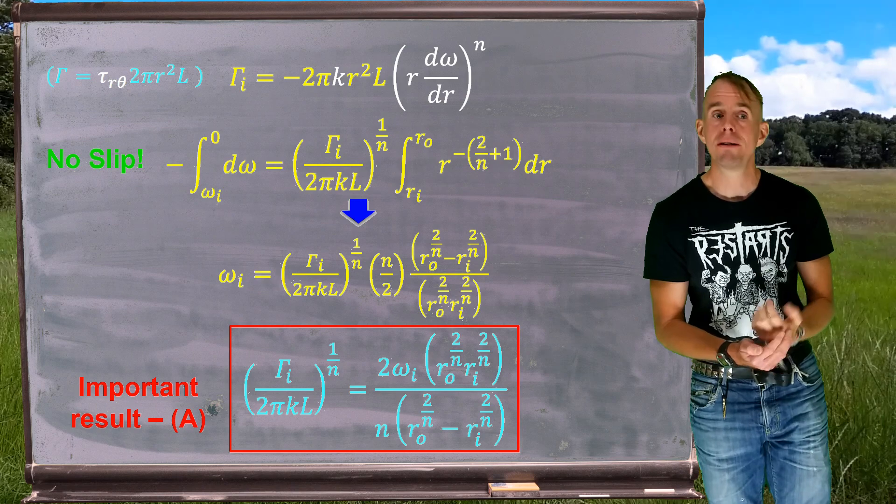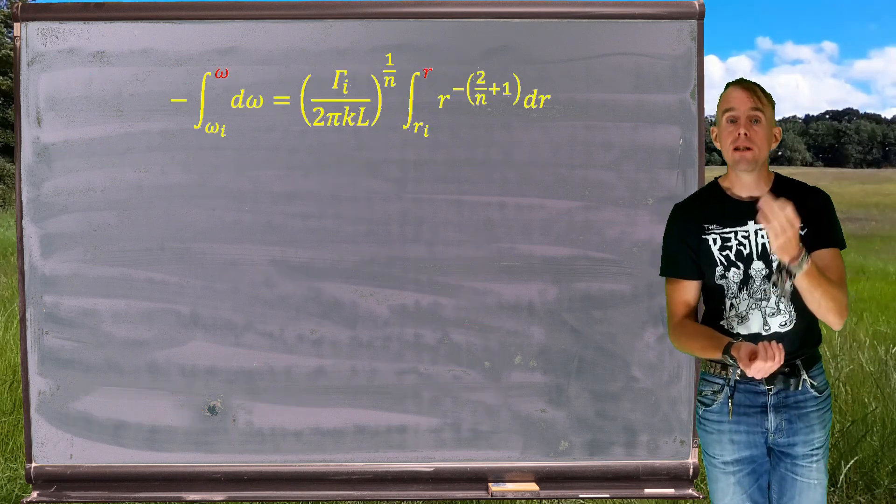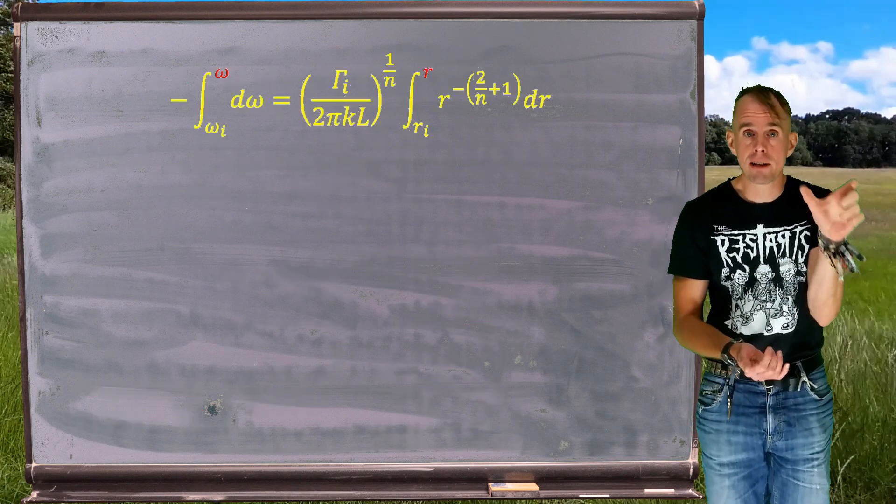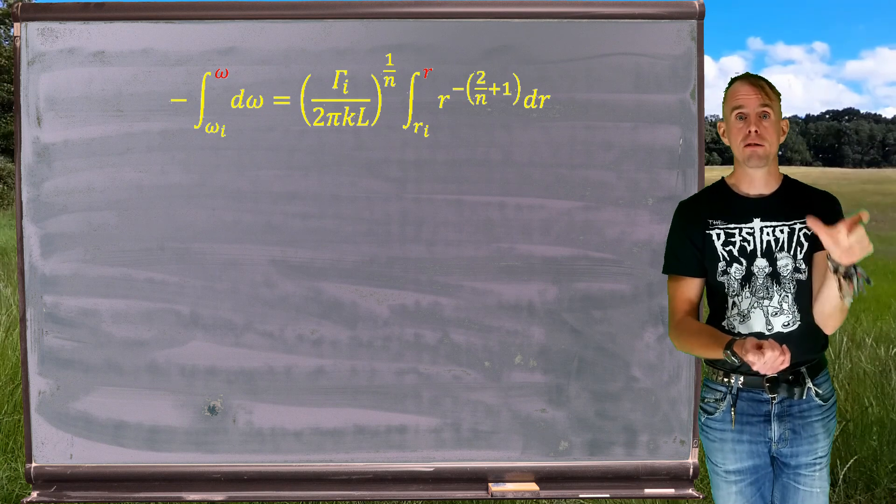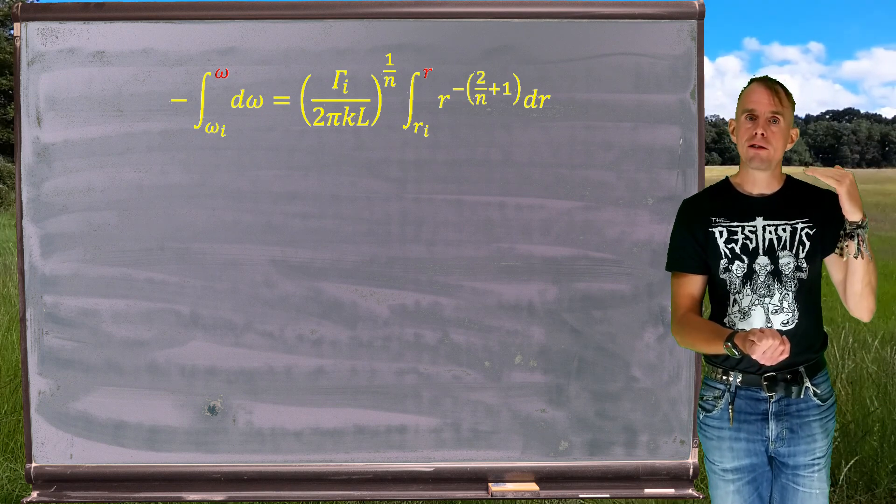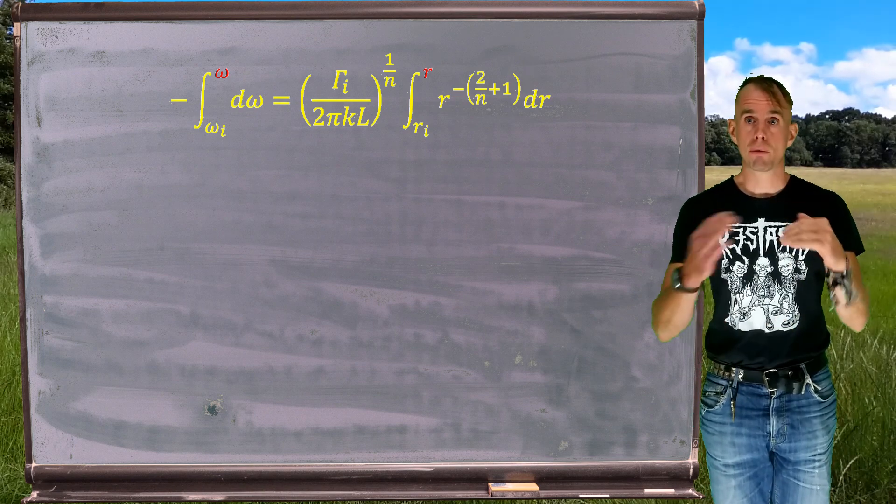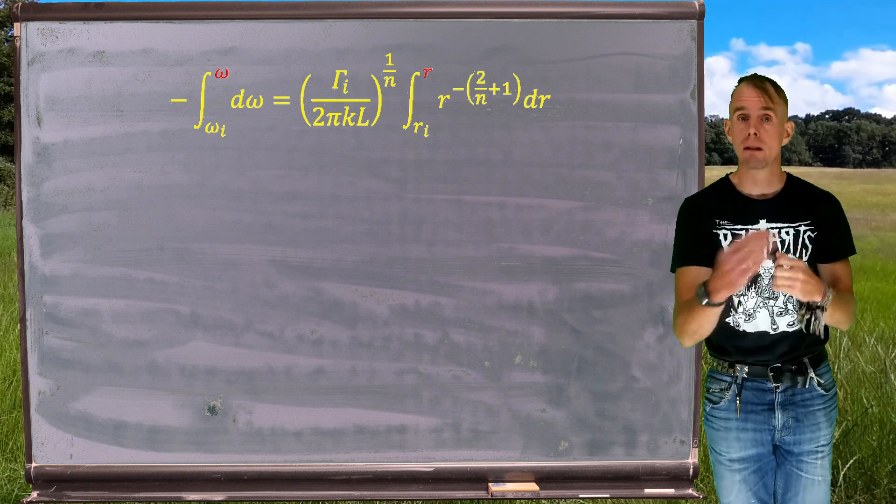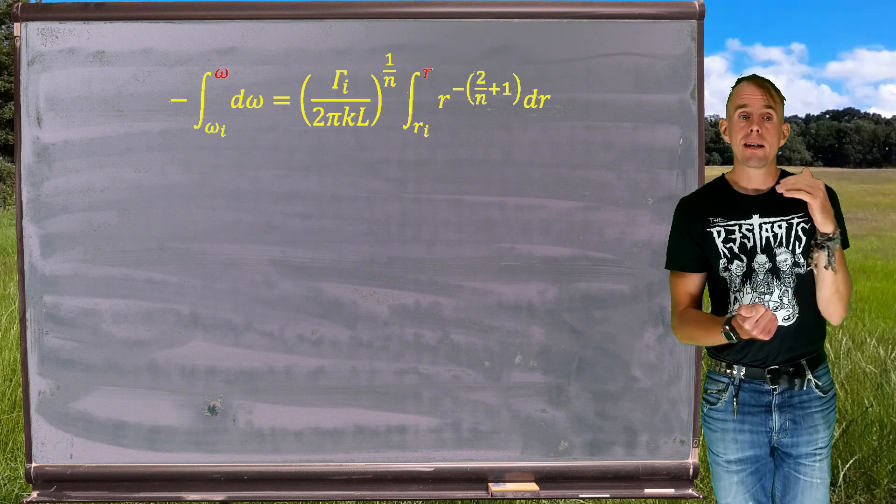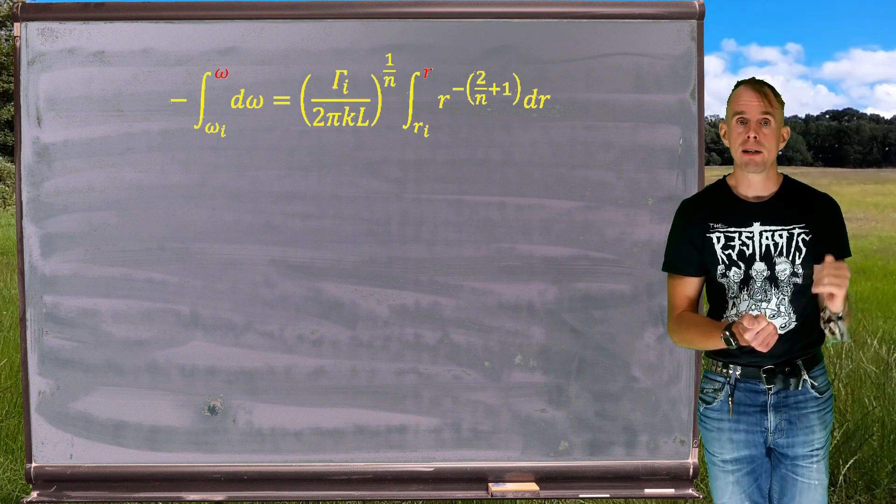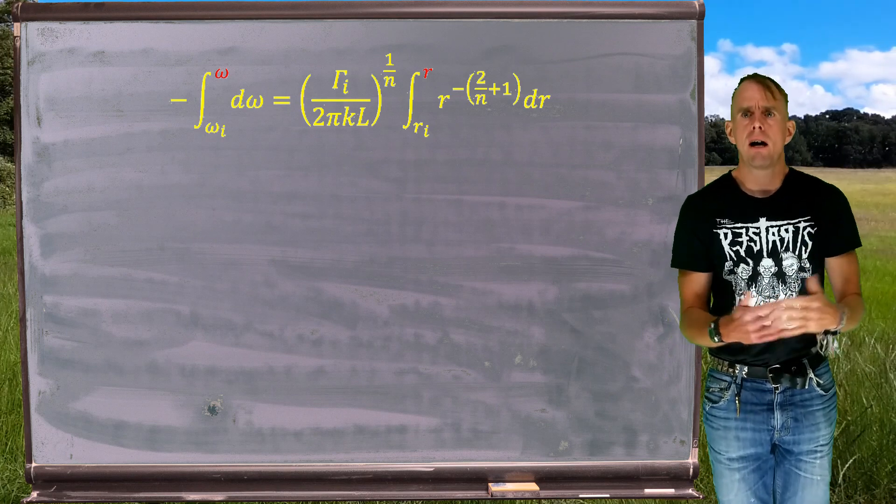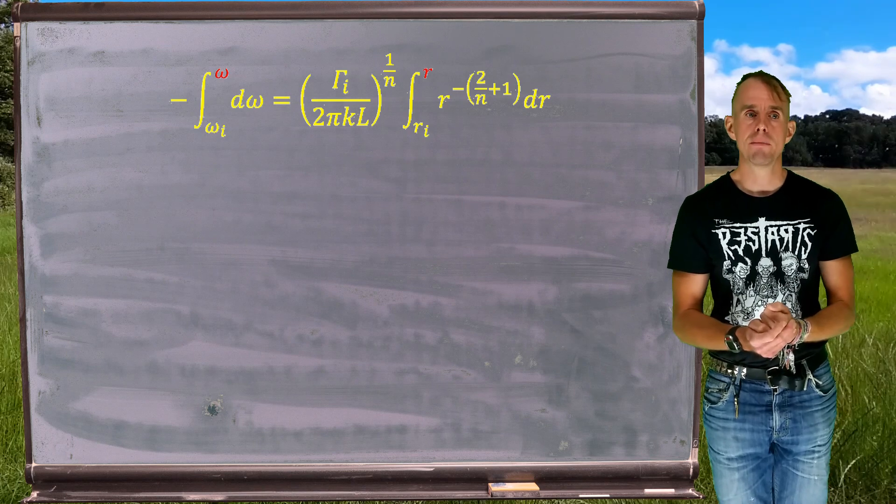So next step in the workflow, do the same integration just with a change of limits. And I've highlighted on the blackboard how those integration limits change. We're now integrating from the inner cylinder to an arbitrary point in the flow because we want to be able to see what the velocity field looks like. And at an arbitrary point in the flow, at radius little r, we have an arbitrary angular velocity, ω.